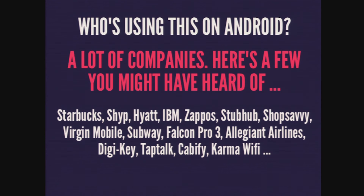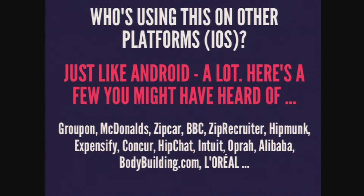Who's using Realm on Android? Starbucks, Ship, IBM, Zappos, StubHub, ShopSavvy, and many more — the list goes on. Big companies are using Realm in production. Realm is running on hundreds of millions of devices — possibly even in apps you have on your phone now. On iOS, Groupon, McDonald's, Zipcar, ZipRecruiter, and even Oprah's using it. It's being adopted by large companies and startups alike.